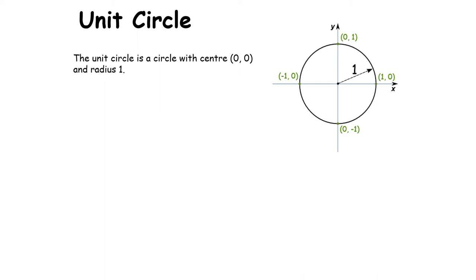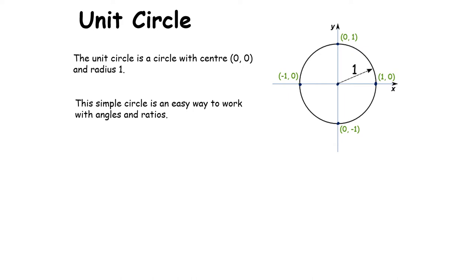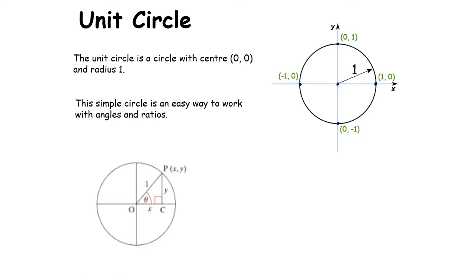Since the circle has center (0,0) and radius 1, we have our points (1,0), (0,1), (-1,0), and (0,-1). This simple circle is an easy way to work with angles and trigonometric ratios.